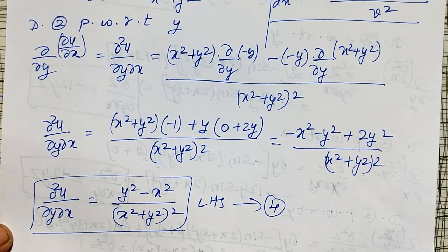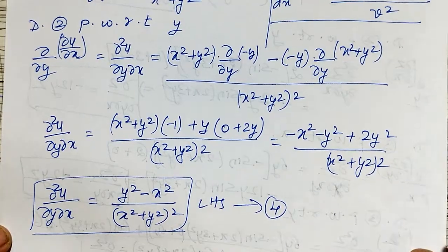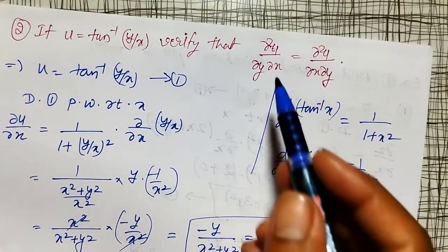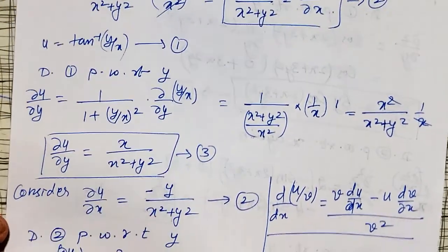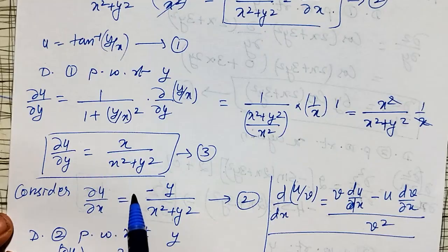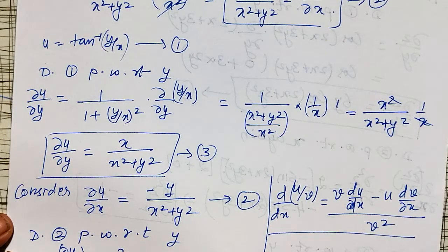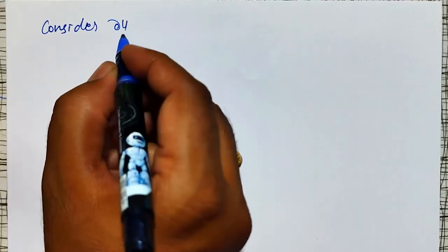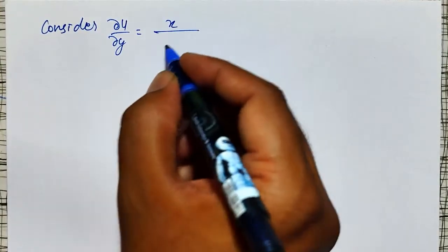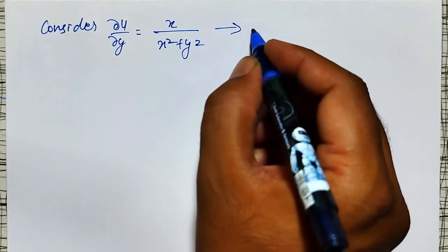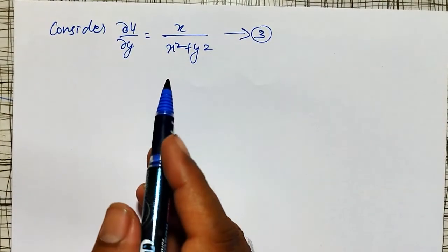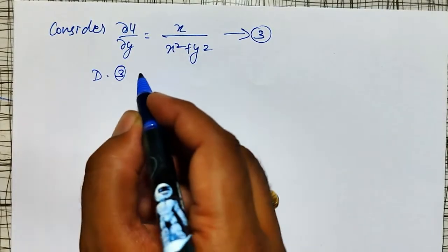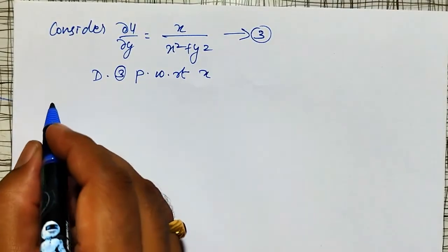Now consider ∂u/∂y = x/(x² + y²) from equation number three. Differentiating partially with respect to x, I get ∂/∂x(∂u/∂y) = ∂²u/∂x∂y. Both numerator and denominator contain x, so I apply the quotient rule again: [(x² + y²)·∂/∂x(x) − x·∂/∂x(x² + y²)] / (x² + y²)².